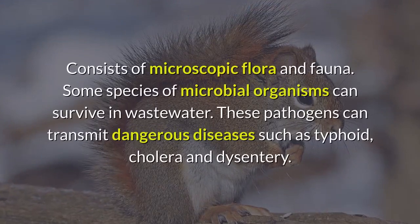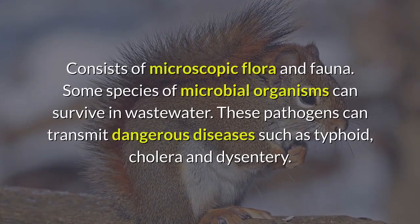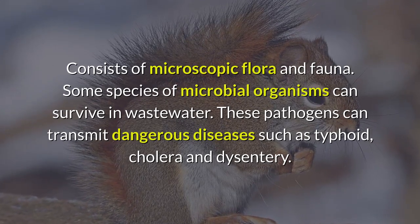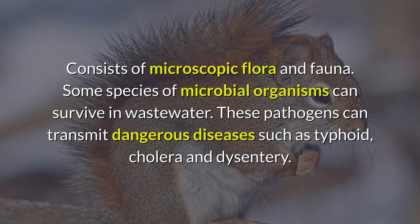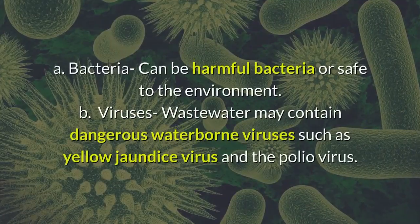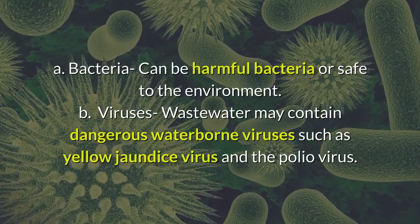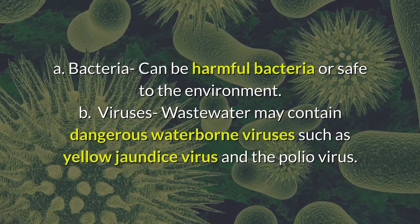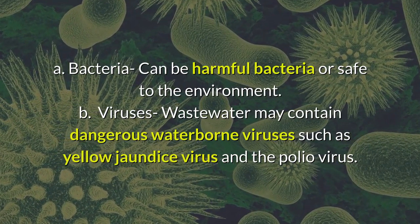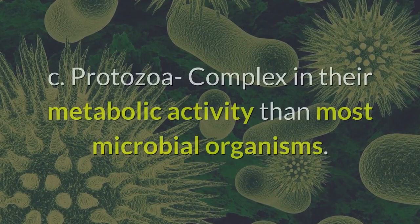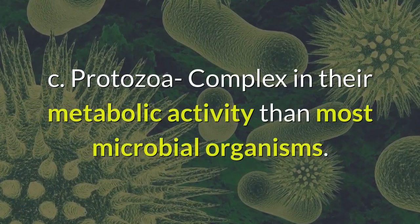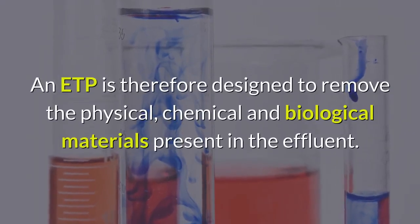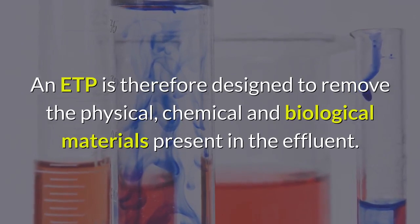The third category is biological parameters, which refers to the presence of microbial pathogens in the wastewater. It consists of microscopic flora and fauna. Some species of microbial organisms can survive in wastewater, and these pathogens can transmit dangerous diseases such as typhoid, cholera, and dysentery. Biological parameters include: bacteria — some harmful, some safe to the environment; viruses — wastewater may contain dangerous waterborne viruses such as yellow jaundice virus and the polio virus; and protozoa, which are more complex in their metabolic activity than most microbial organisms.